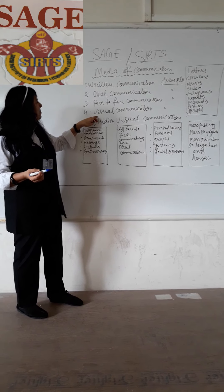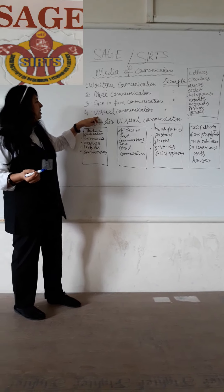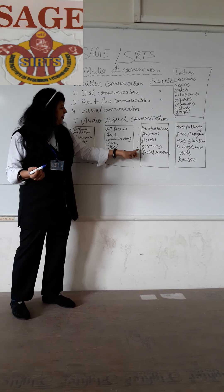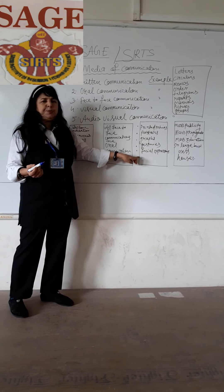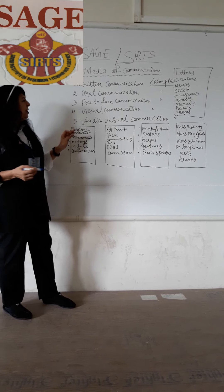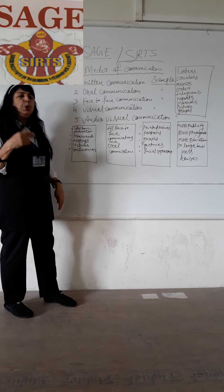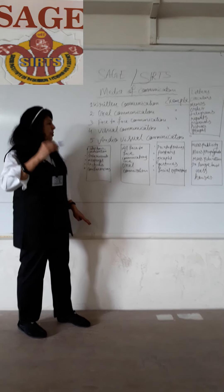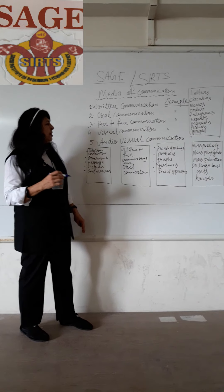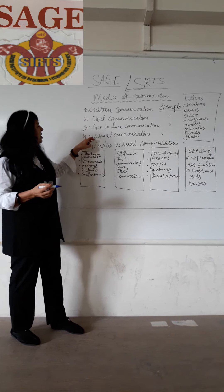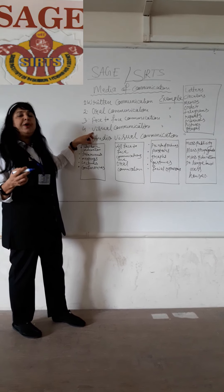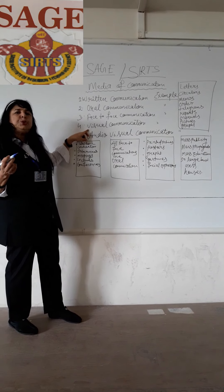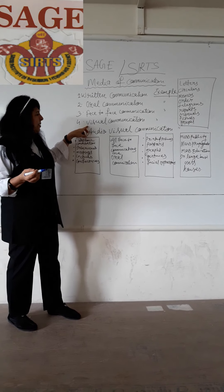The third type is visual communication. Visual communication includes printed pictures, posters, graphs, gestures, and facial expressions. When we show pictures, graphs, posters, or observe facial expressions, that is visual communication. When we are watching mute TV or any television show, that is also called visual communication.